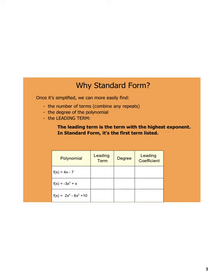So why standard form? Once it's simplified, we can more easily find the number of terms — that's where we combined the x squared terms so we know exactly how many different exponents there are throughout the polynomial. We can see the degree and the leading term. For instance, the leading term on the first one here would be 4x. The degree would be 1 because it's 4x to the first, and then the leading coefficient is that 4, which is the value out in front of the x term.